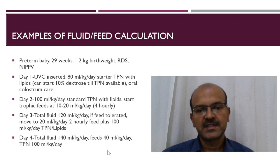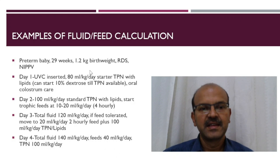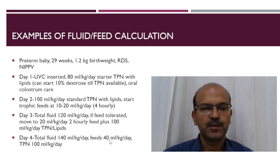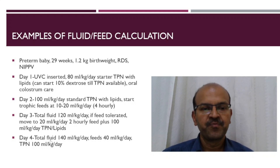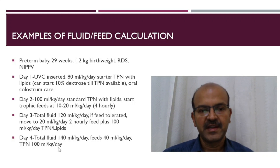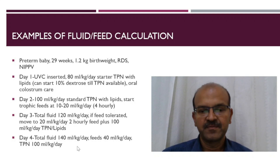On day 4, the volume started increasing. Even though this baby was 1.2 kilos, we went by 20 ml per kilo per day being a sicker baby, and the TPN would be 100 ml as the total fluid is 140.